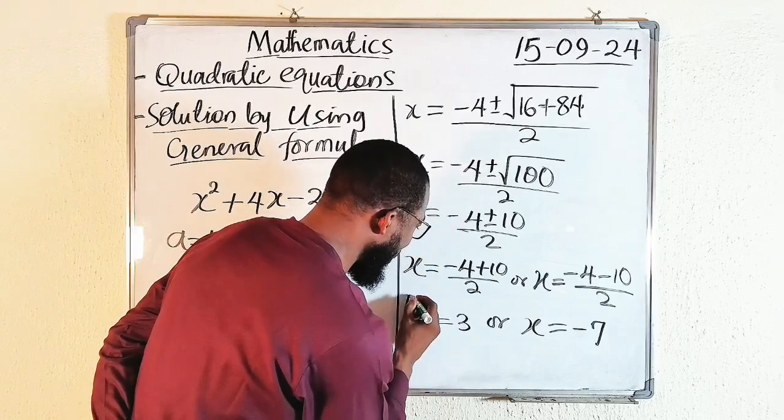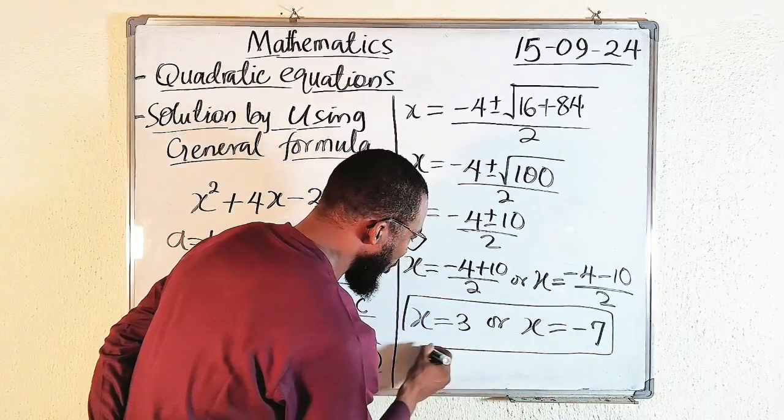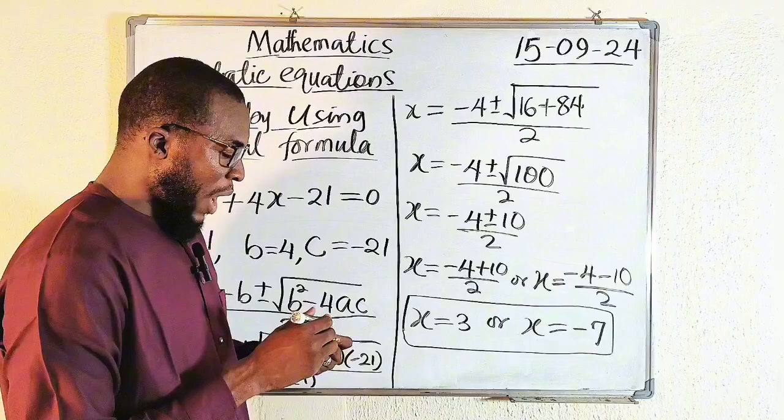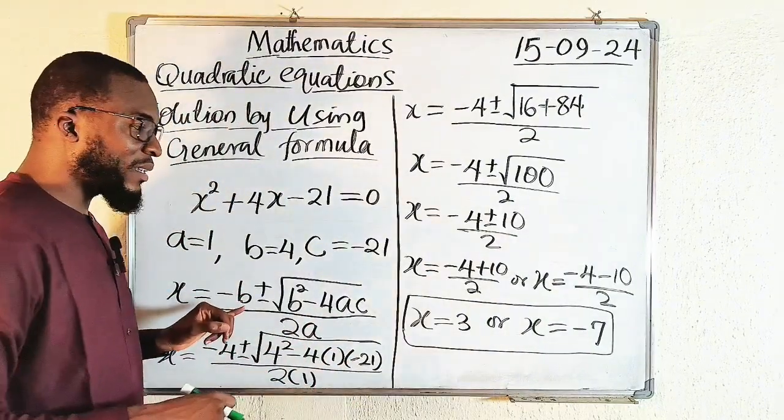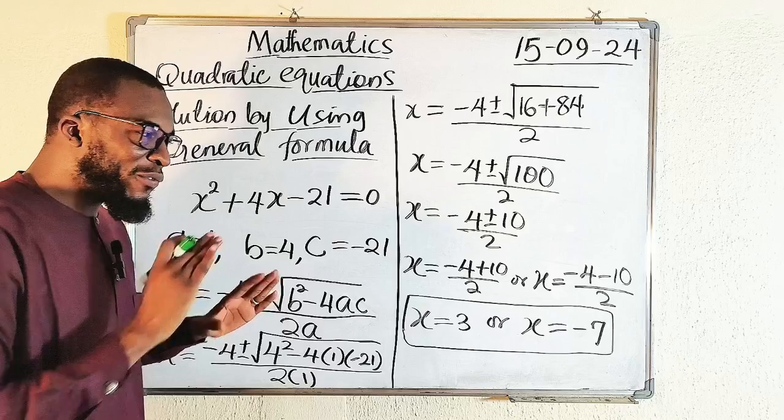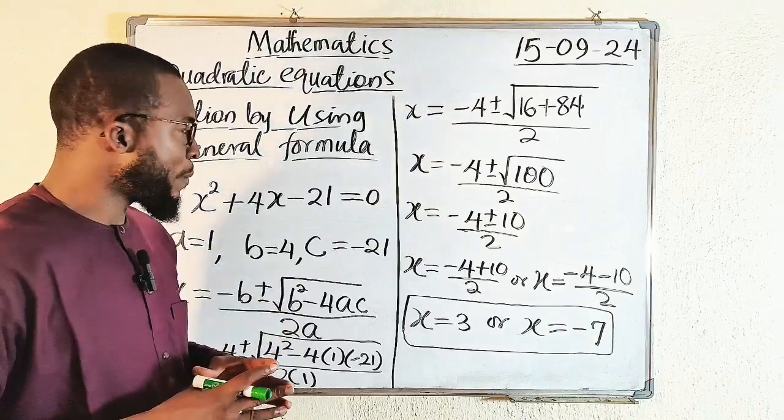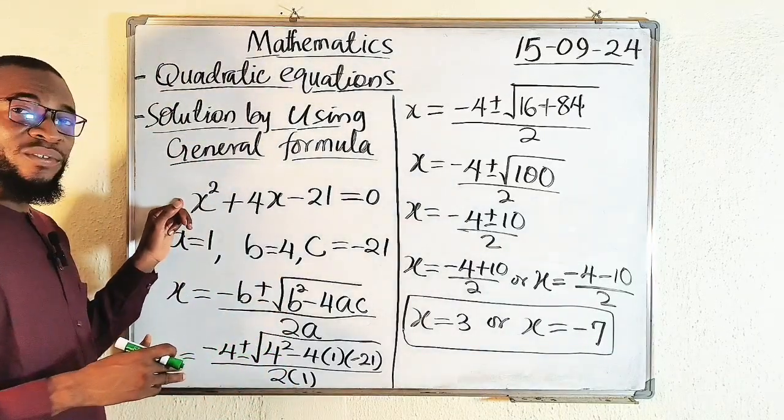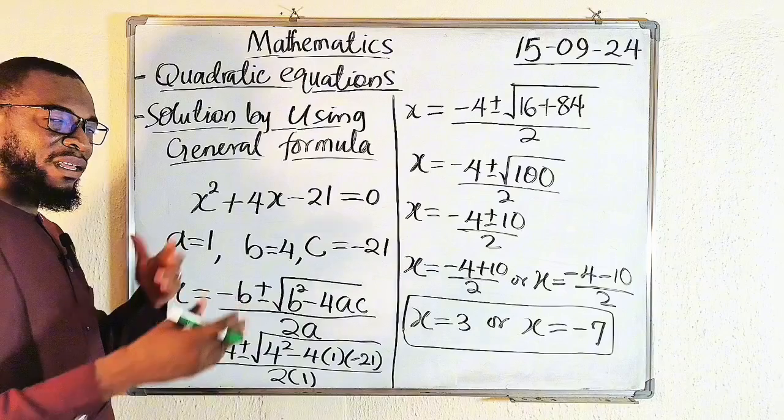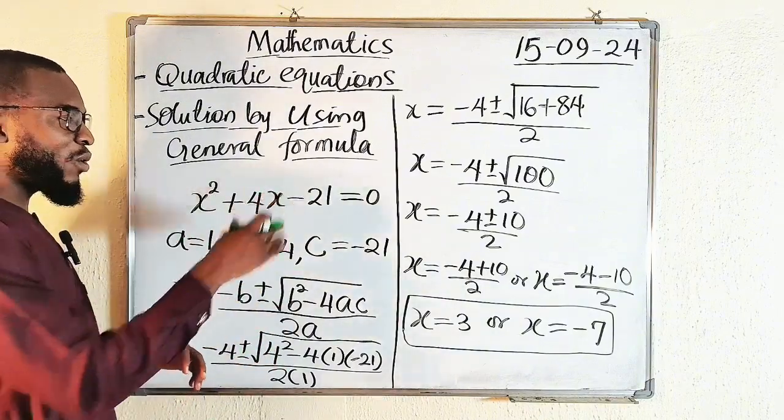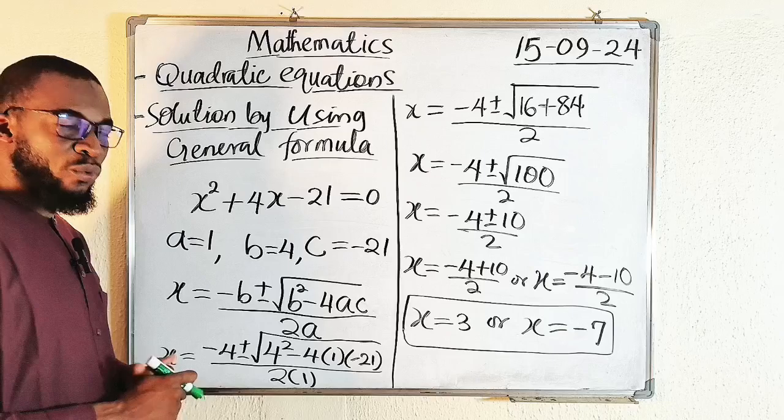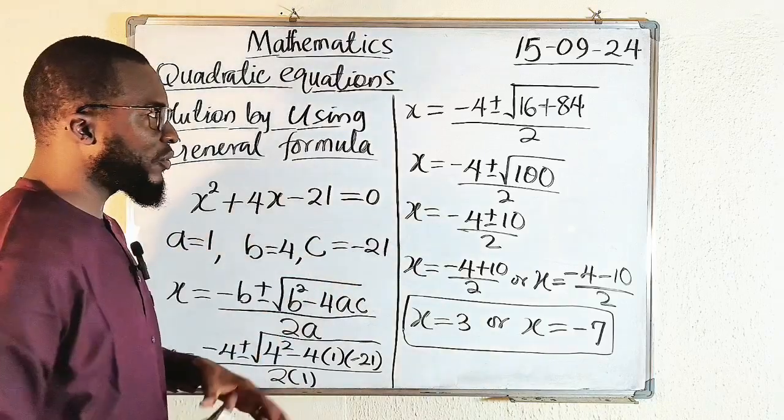So you can see that by using the general formula, we are able to solve this quadratic equation. And one of the significance of this general formula is that it can solve every form of quadratic equation. Even if the leading coefficient is not 1, something like negative 2 or 3, or even if the quadratic equation has complex roots, you can use the general formula to solve it.